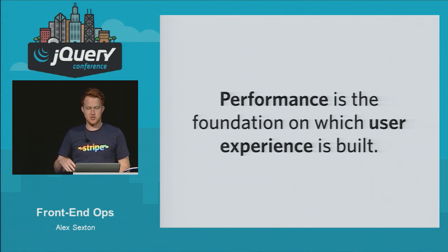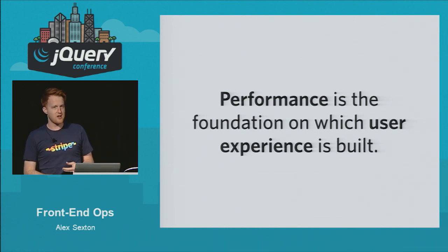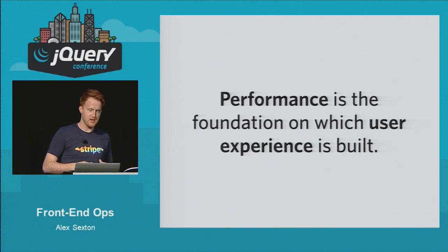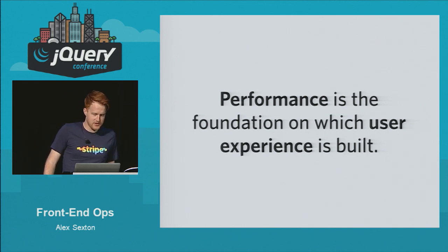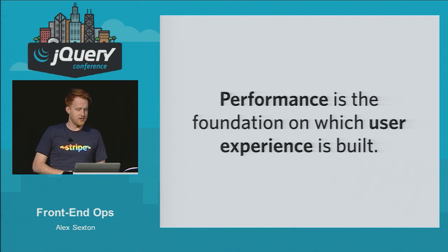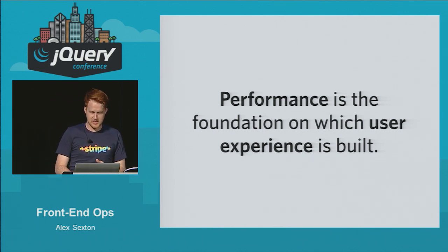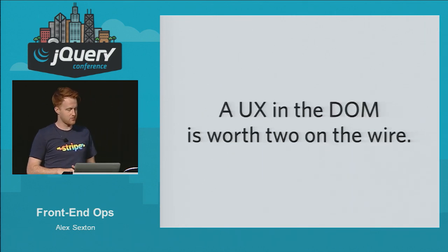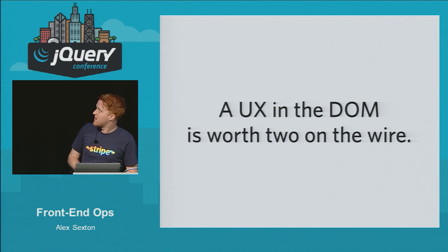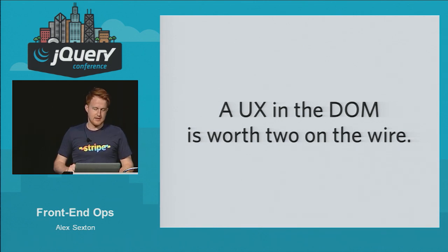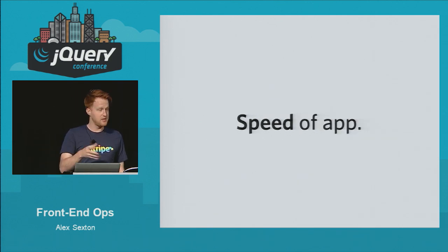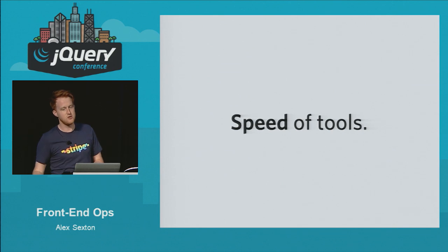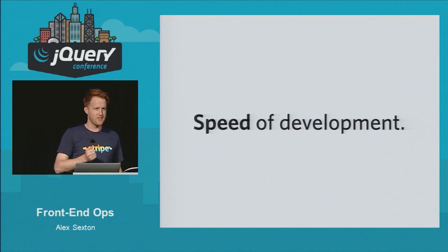Performance is the foundation on which a user experience is built. You can have the coolest user interactions, the sweetest libraries, everything you want — but if it's slow, it doesn't matter. A UX in the DOM is worth two on the wire. Getting your user experience to your users quickly is extremely important. There are different types of speed: the speed of the actual application, the speed of your tools, and the speed of development — developer happiness.